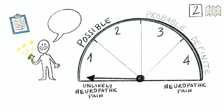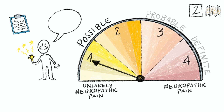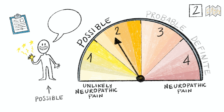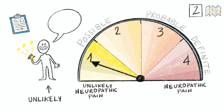If both criteria 1 and 2 are fulfilled, then a patient's presentation is classified as possible neuropathic pain. If only one or none of these two criteria are fulfilled, the presentation is considered to be unlikely neuropathic pain.